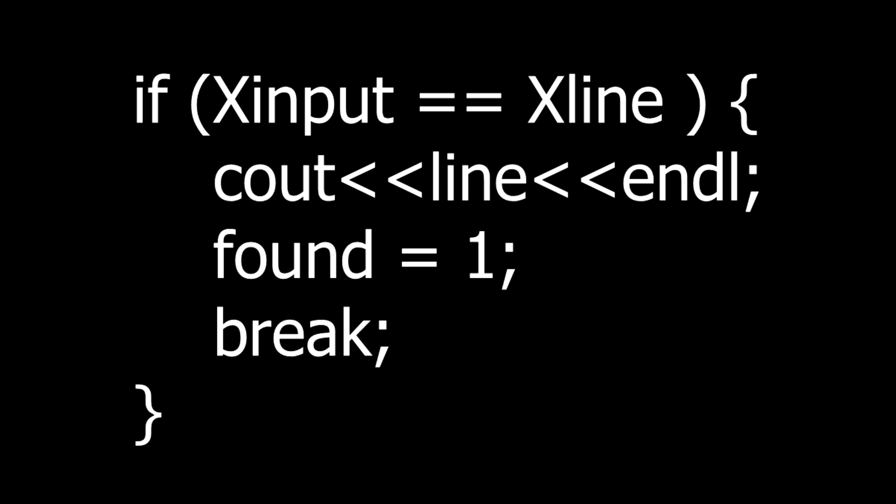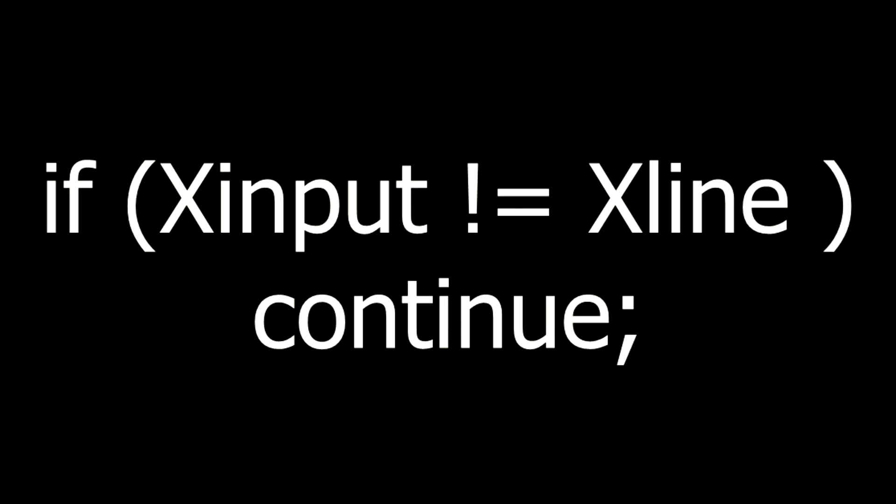If both strings are the same, print the word from the file, make found equal to one, and break all loops. If strings are not the same, keep checking. At the end, return the value of found.